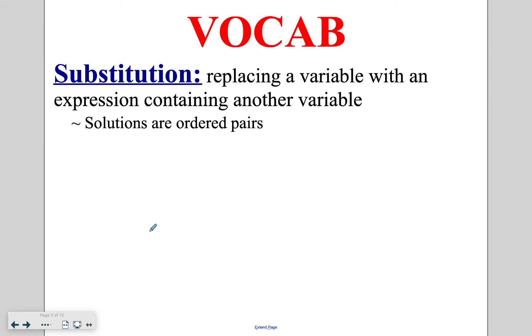Substitution is one of the two methods that we are going to use to solve system of equations algebraically. So in our last lesson, we discussed graphing to solve. Now we're going to do a couple of different algebraic methods. The solution is still an ordered pair, so you're still going to have your answer written in an x comma y format, but now we're going to solve it algebraically by replacing one of the variables, x or y, with an expression containing the other variable. The goal is so that there is only one variable in the equation that you are going to be solving.